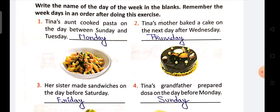Now we are going to do question number one. Tina's aunt cooked pasta on the day between Sunday and Tuesday. Between means hota hai beech mein. So Sunday aur Tuesday ke beech mein kya aata hai? The correct answer will be Monday.